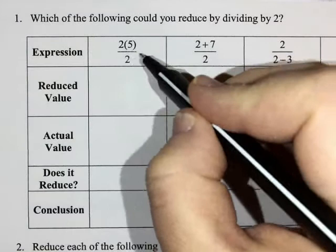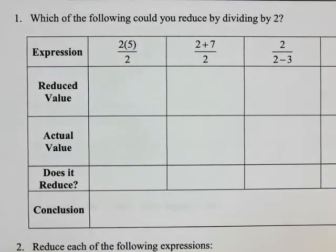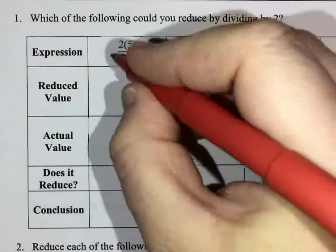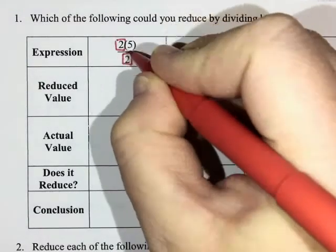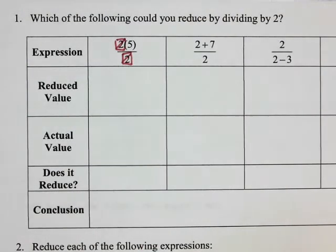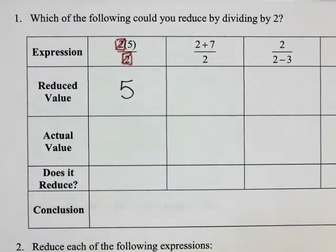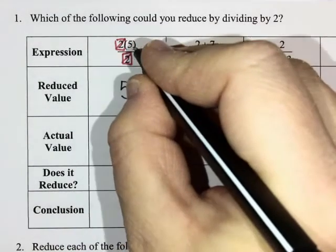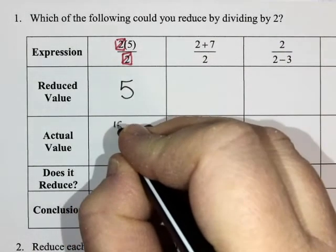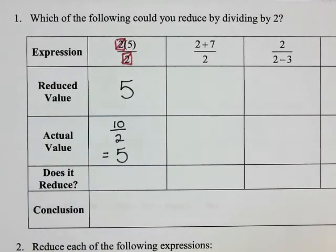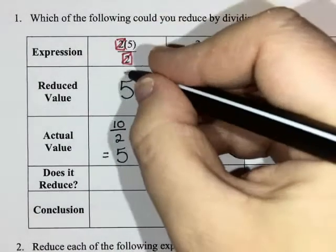I have two times five divided by two. If I were to reduce by dividing out the twos — two divided by two equals one — I'd be left with one times five, so my reduced value would be five. Does that really work? Two times five is ten, divided by two is five. So yes, dividing out those twos worked.